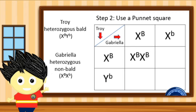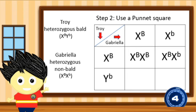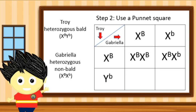For the second box: the combination is identical X chromosomes with a superscript of capital letter B and small letter b. For the third box: the combination is X and Y chromosomes with a superscript of capital letter B and small letter b, representing a male heterozygous bald trait carrier.